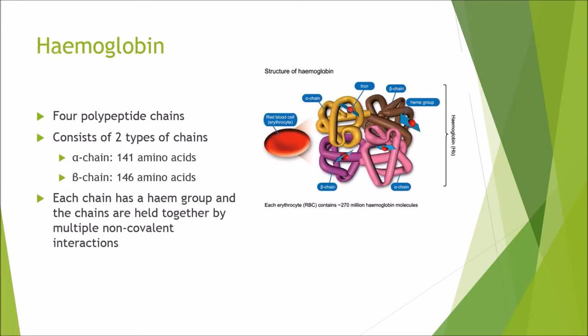Hemoglobin, on the other hand, has 4 polypeptide chains. Adult hemoglobin consists of 2 different types: 2 alpha chains and 2 beta chains. The alpha chains have 141 amino acids, whereas the beta chains have 146 amino acids. Each of these chains has a heme group — a prosthetic group — attached to it, similar to myoglobin.